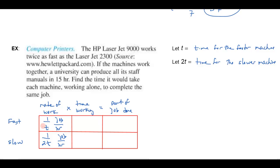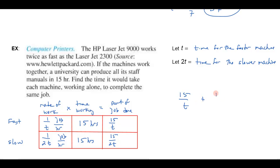The problem tells us that when the machines work together for 15 hours they complete the whole job. So the fast machine works 15 hours and the slow machine works 15 hours. The part of the job done by the fast machine is 15/t, and the part done by the slow machine is 15/(2t). Setting up the equation: 15/t + 15/(2t) = 1, where the left side represents the fractions of the job done by each machine adding up to one whole job.